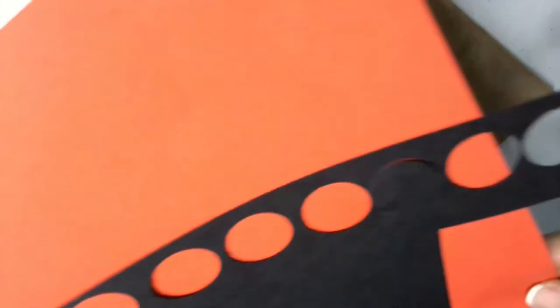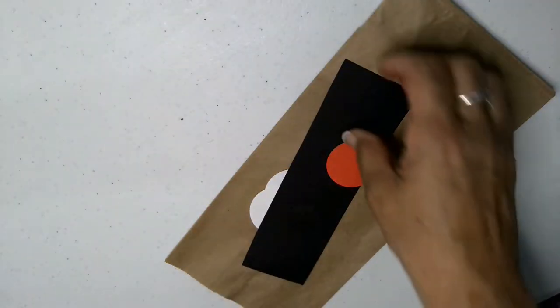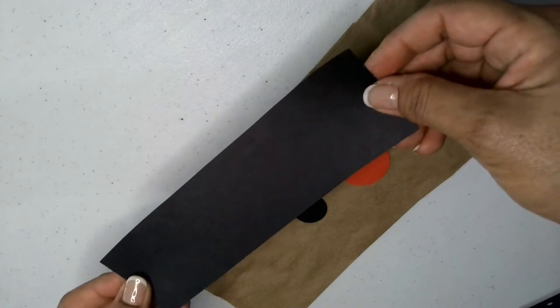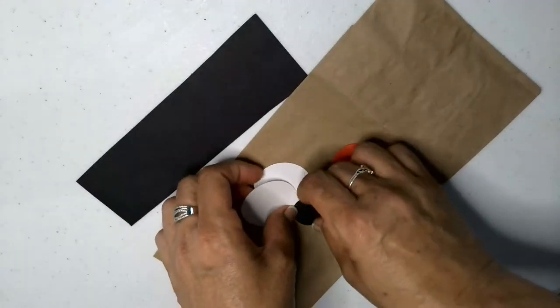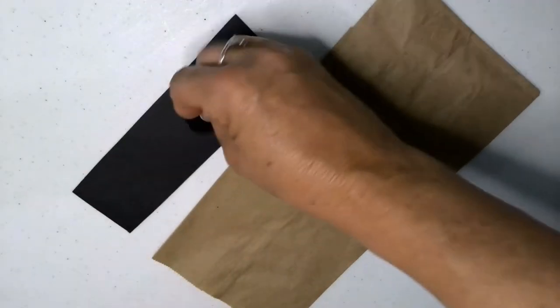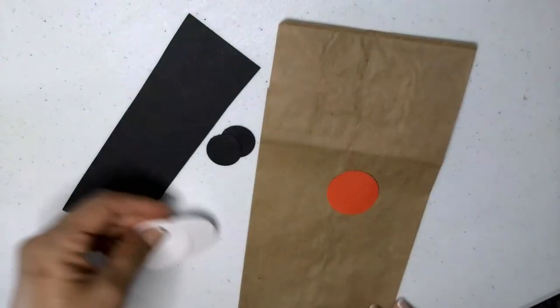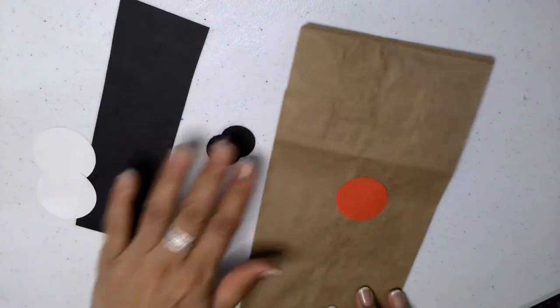So you need red construction paper, white construction paper, and black construction paper. I actually cut a strip of black construction paper and I also cut the small circles out of black paper too before I started, so I was faster on the video.